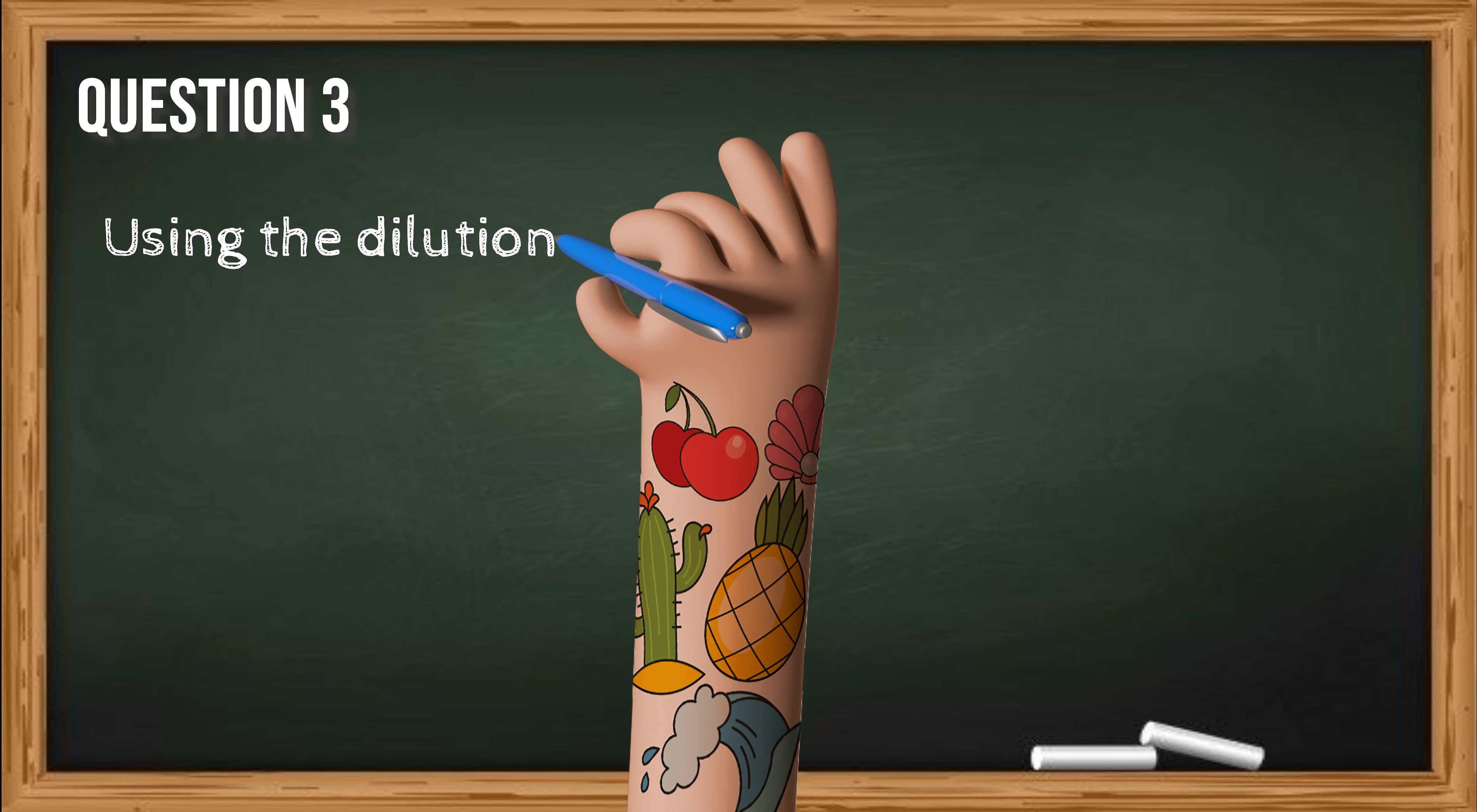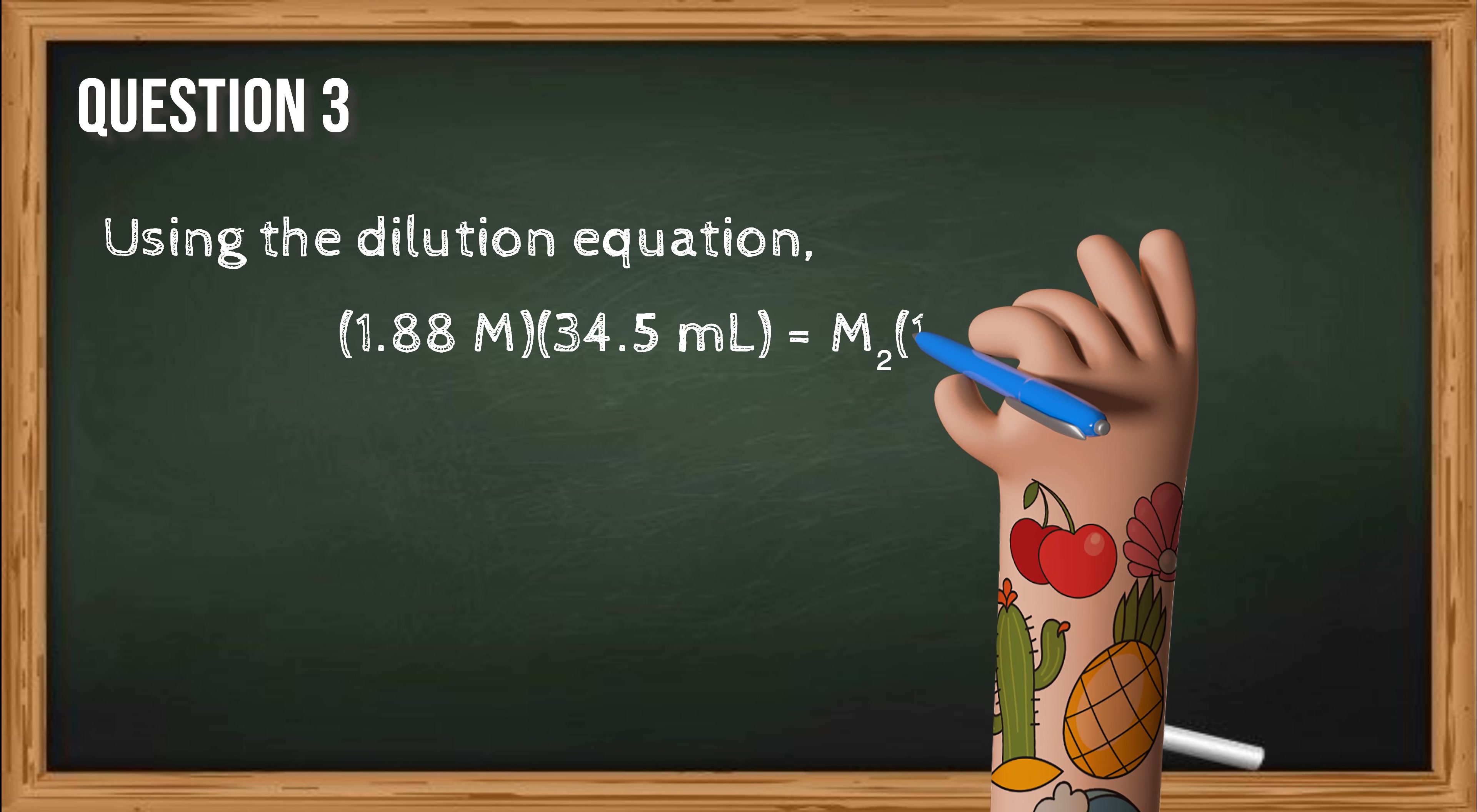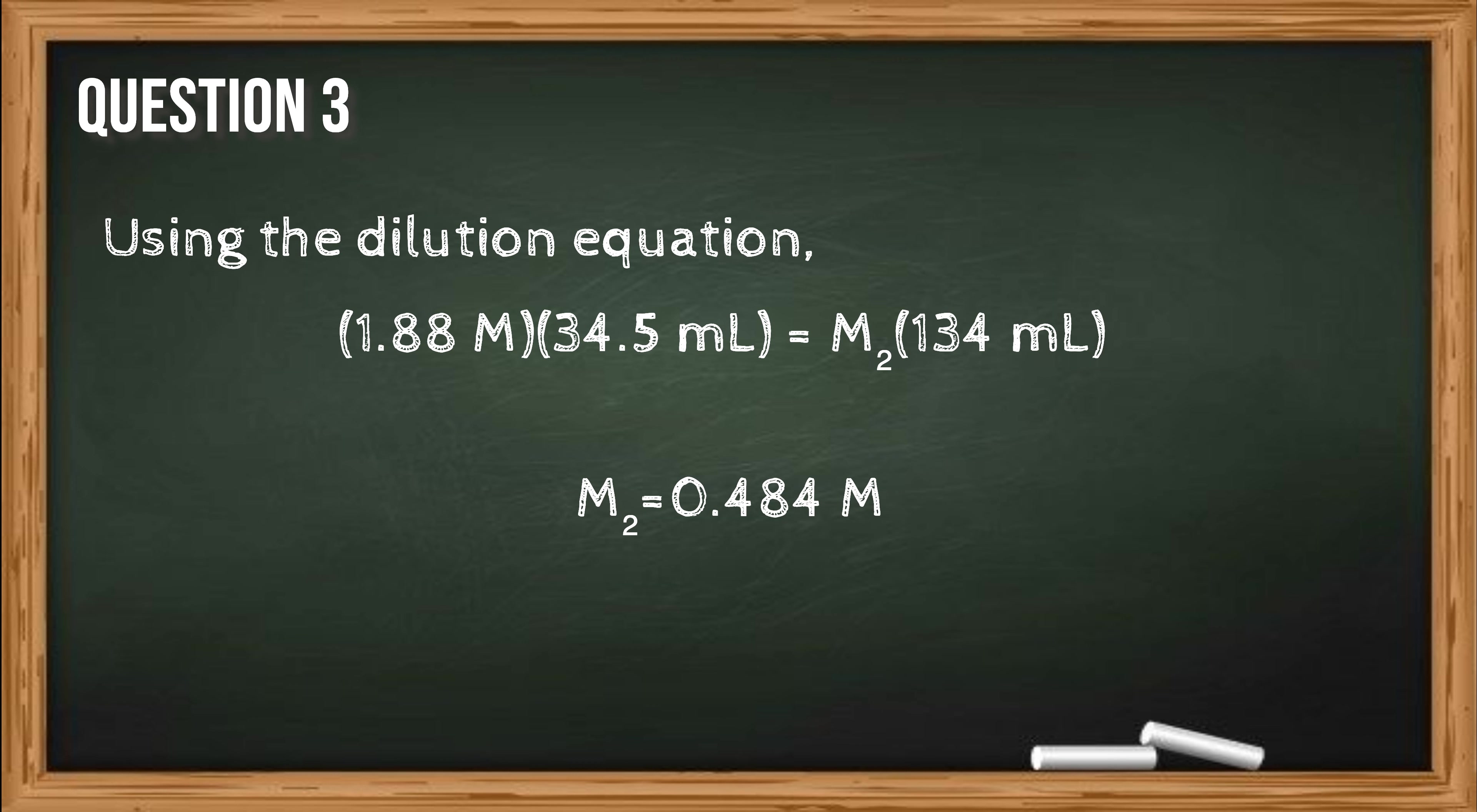Again, using the dilution equation, we have the following. 1.88 molar times 34.5 milliliters is equal to M2 times 134 milliliters. Therefore, solving for M2, the final concentration of the sodium chloride solution is 0.484 molar.